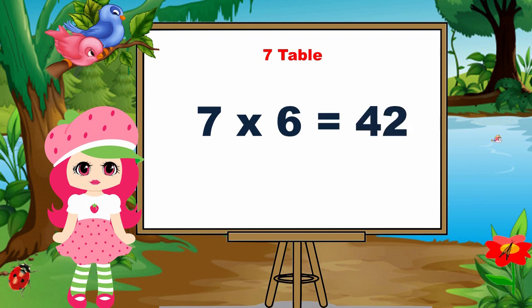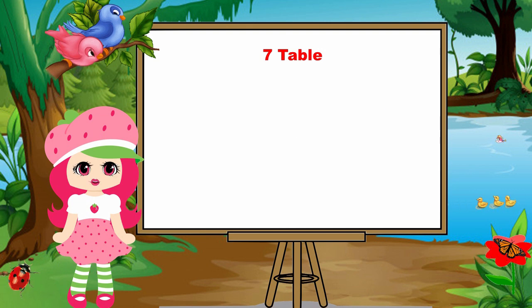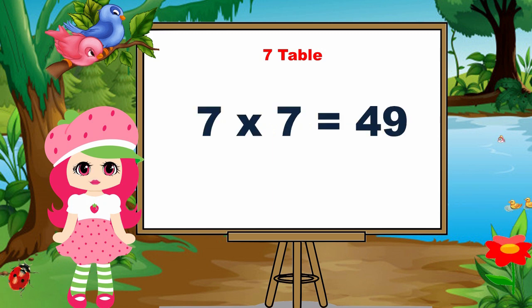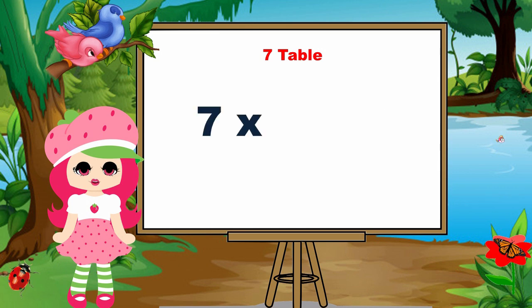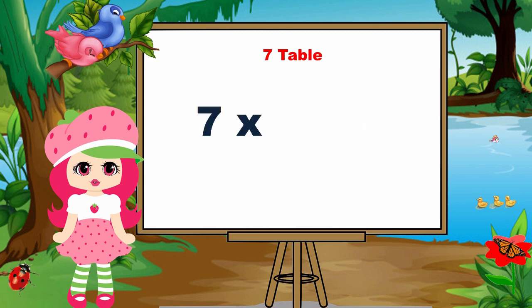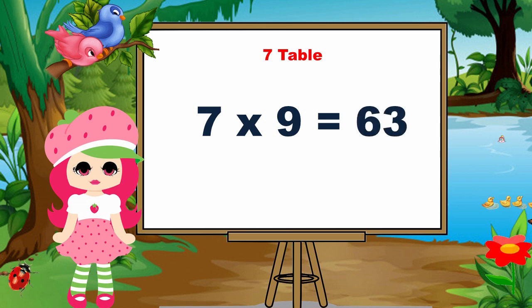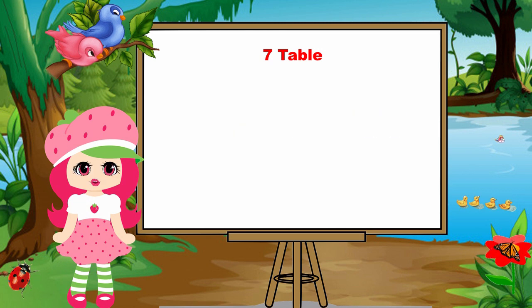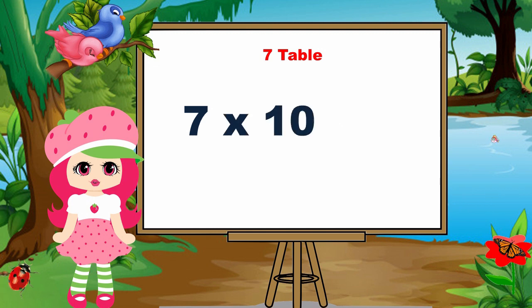Seven sevens are forty-nine. Seven eights are fifty-six. Seven nines are sixty-three. Seven tens are seventy.